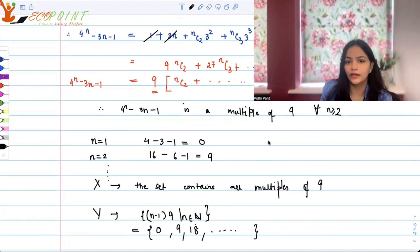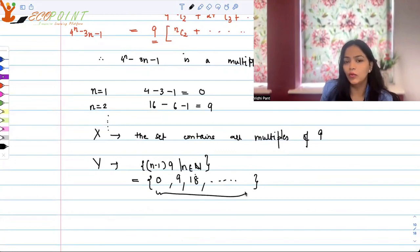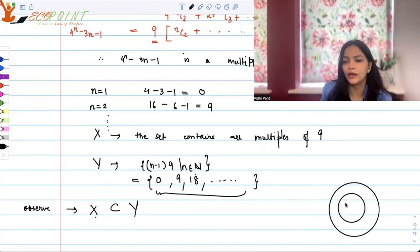Clearly if you observe, Y would contain more elements. It's like a table of 9 going on, so Y would contain more elements, and X you will have to observe that with certain values, X is actually a subset of Y. It's a proper subset of Y. Proper means that they're not equal. It's a proper subset of Y, which means that X is absolutely inside Y.